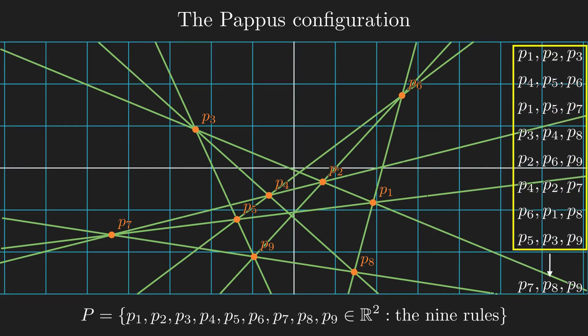No matter where all of the points are, as long as the first eight rules are already there, the ninth rule is always implied. This is what is special about the Pappus configuration, and it's called Pappus' theorem.